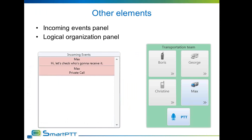There are also elements providing other functionality. One is the incoming events panel, which registers all calls and messages coming to the dispatcher and shows them in a list. All new events are listed in a light red color. When the dispatcher clicks an event, it becomes white, showing that the dispatcher has confirmed awareness of the event. Another type is panels, which can contain any number of different elements and keep them all grouped together. When editing the console, moving a panel will move all elements on it. You can also put a PTT button on a panel to make simultaneous calls to all elements on it, useful for calling a specific set of subscribers or talk groups not connected by a single talk group.